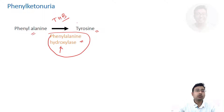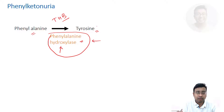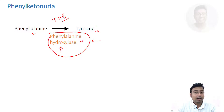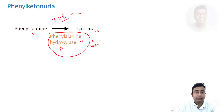So what can be the two reasons why phenylalanine cannot be converted to tyrosine? Number one, this enzyme itself is defective — it may be occurring in less proportion, it may be absent, or in a minor case, the level of this enzyme may be alright but the level of cofactor is deficient.